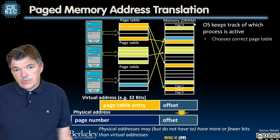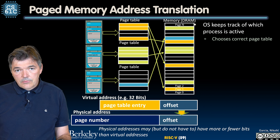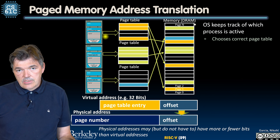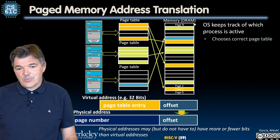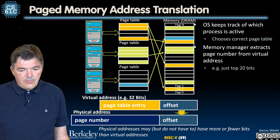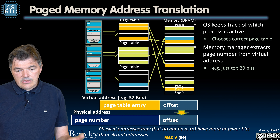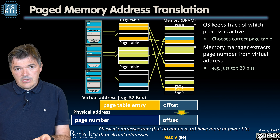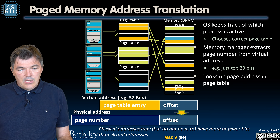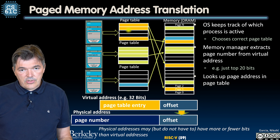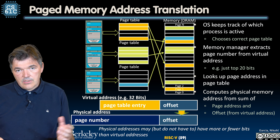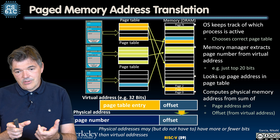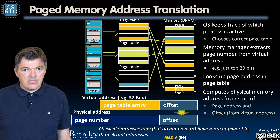The operating system keeps track of which process is active. When a process takes over the processor, its page table becomes active as well — it is part of the state corresponding to that process. The memory manager extracts the page number from the virtual address by taking the top 20 bits, retains the lower 12 offset bits, looks up the page table entry, and computes the physical memory address by concatenating the physical page address with the 12 offset bits.